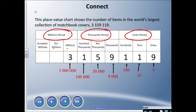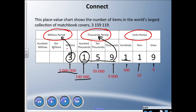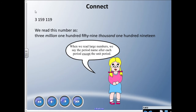When we're reading this, we're going to read the name of the period, but we're not going to read it in the units period — just the way it is. This three here represents three million, and this one here represents a hundred thousand. So we say: three million, one hundred fifty-nine thousand, one hundred nineteen. We don't say 'one hundred nineteen units' because we don't say the name of the units period.